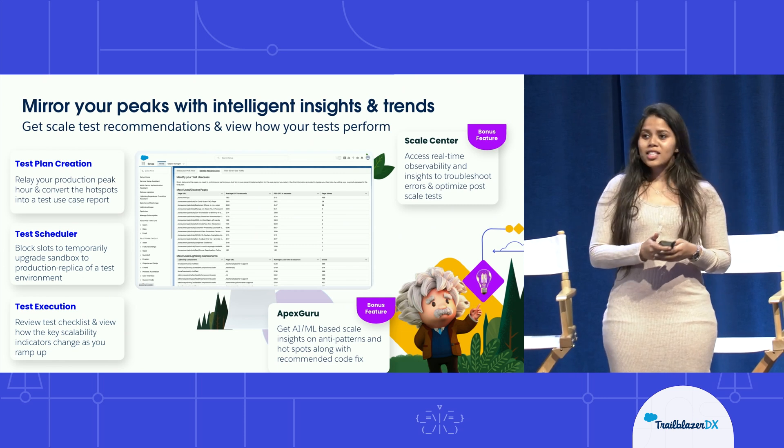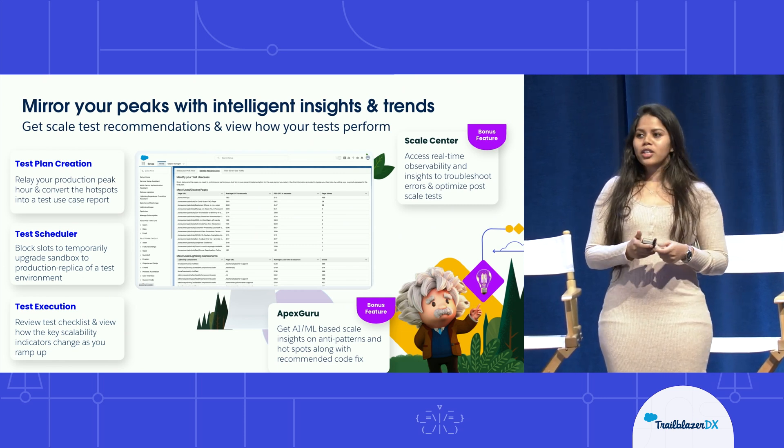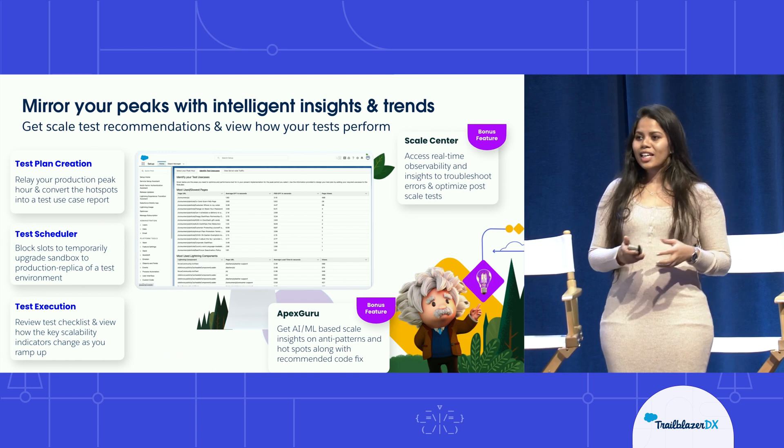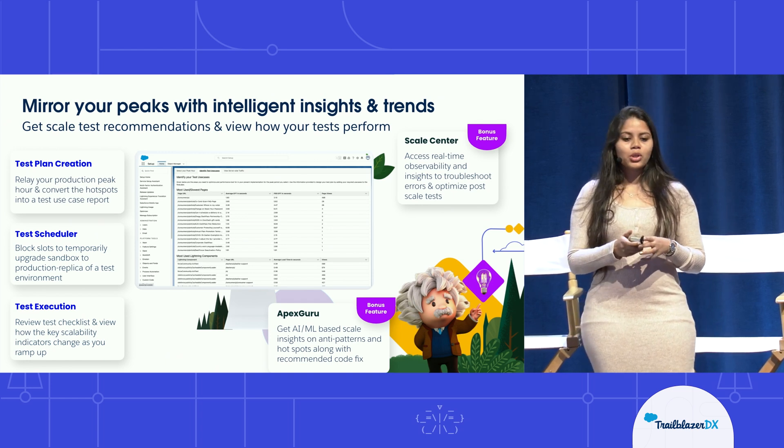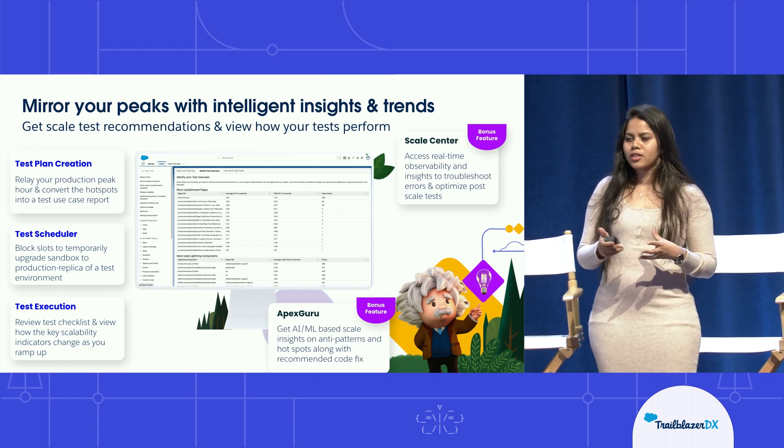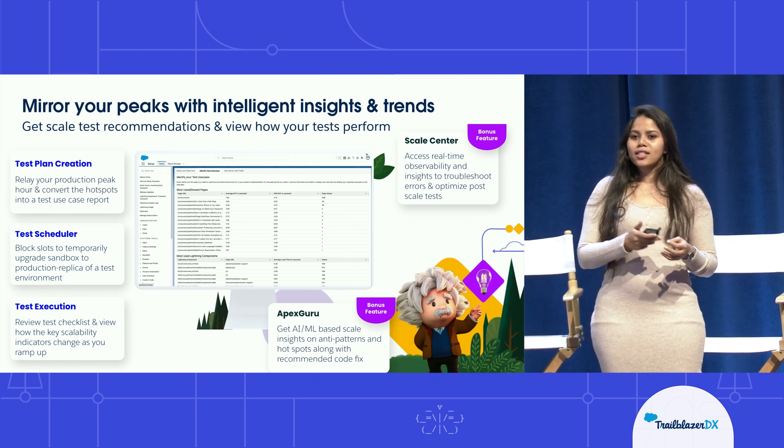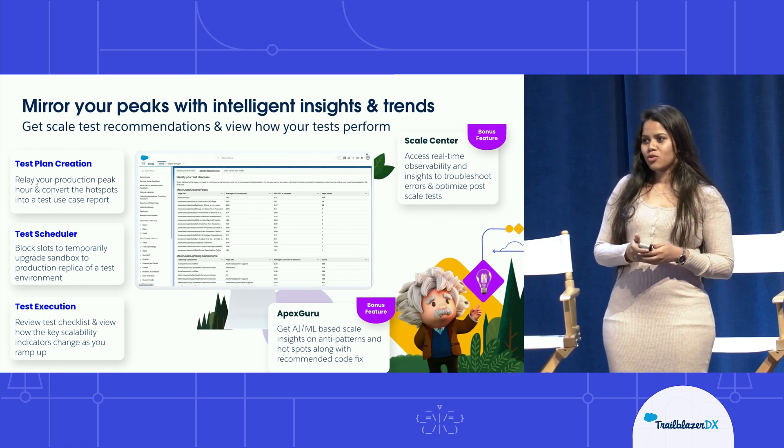We ask customers to select scale test days on the instance calendar we provide. For those particular days, we will provide this temporary enhancement so it will be like you are testing on a production-like instance. In addition to that, we provide fantastic capabilities to help you test more accurately, easier, and faster. Starting with test plan creation — found in your production org — we relay your production scale hotspots and show you your most used pages, Lightning components, and server-side metrics, so you can convert these insights into a valuable, easy-to-use test case report.